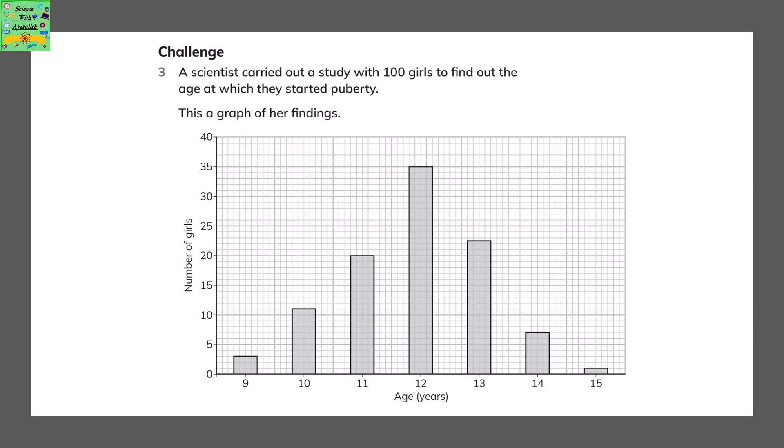A scientist carried out a study with 100 girls to find out the age at which they started puberty. This is a graph of her findings.